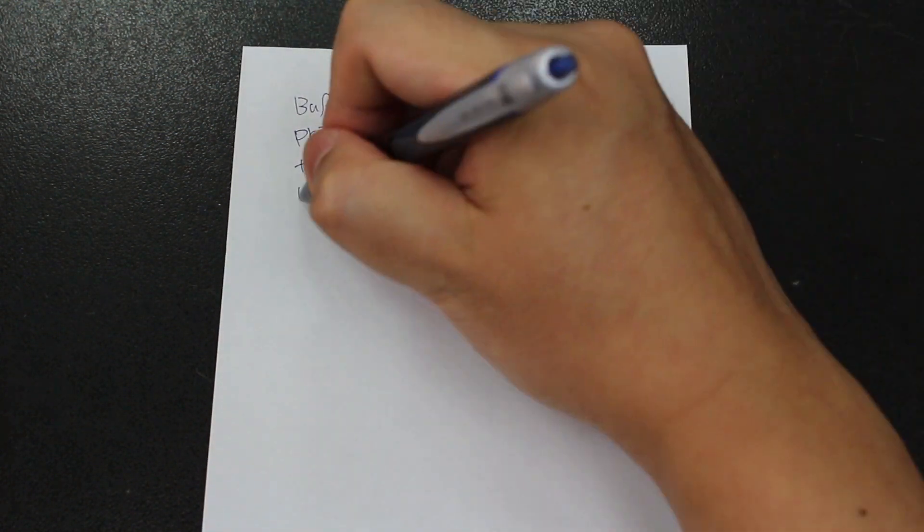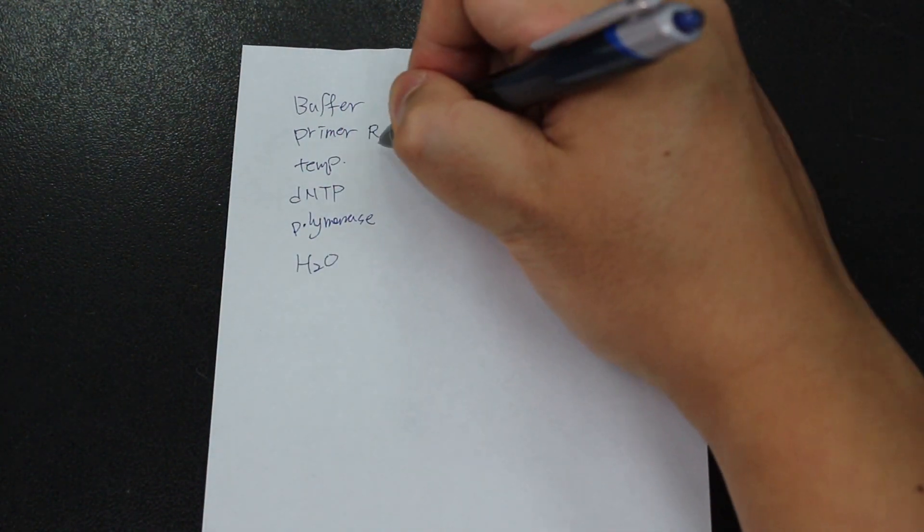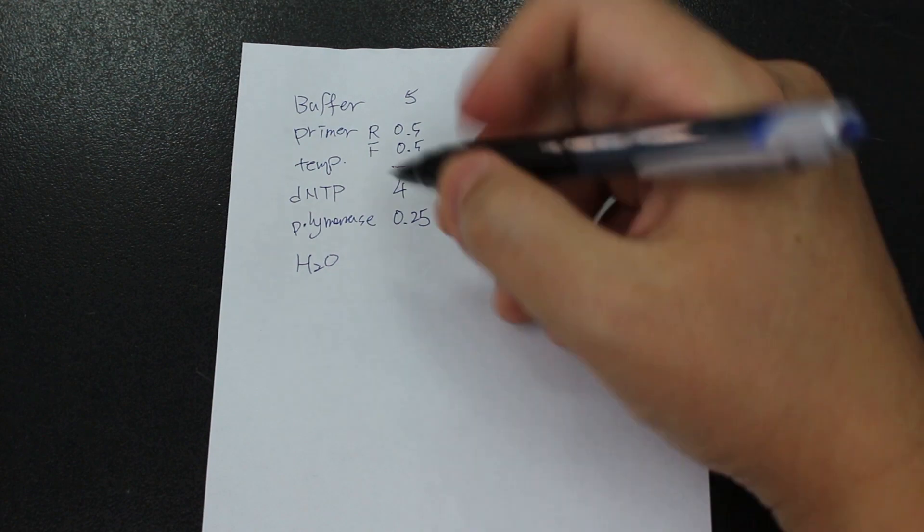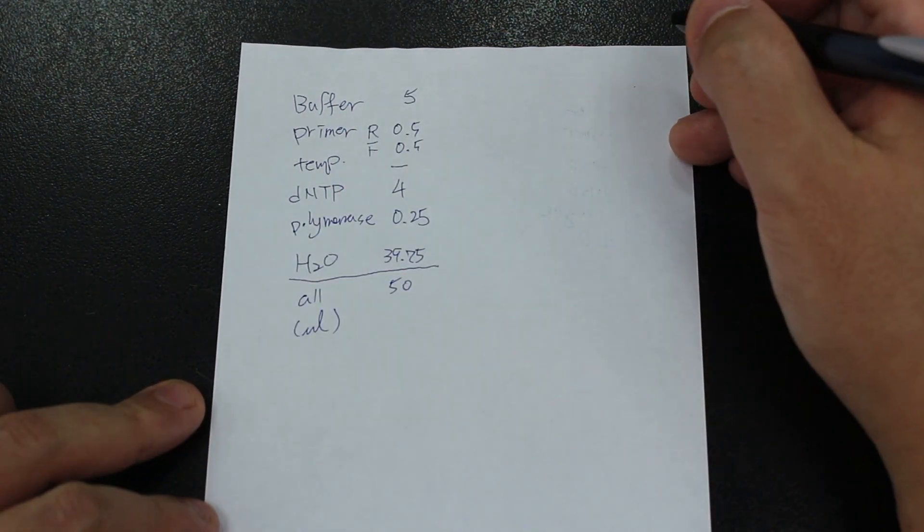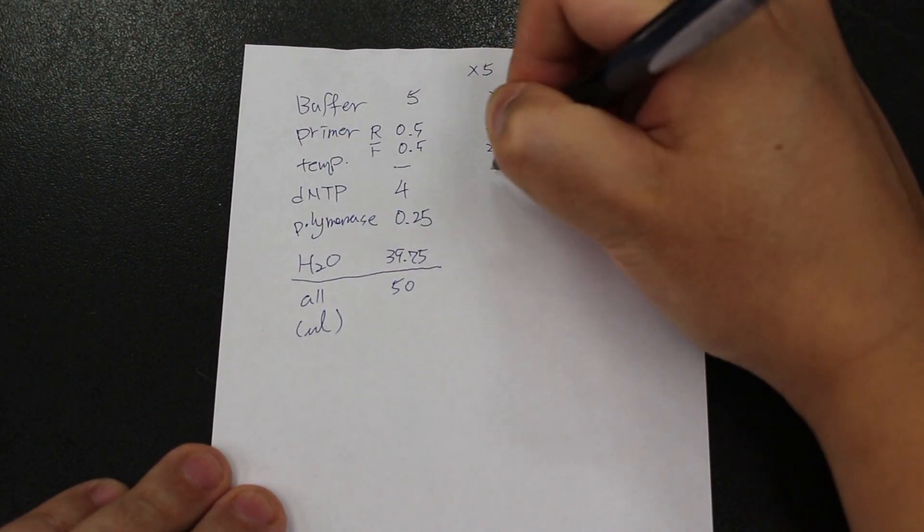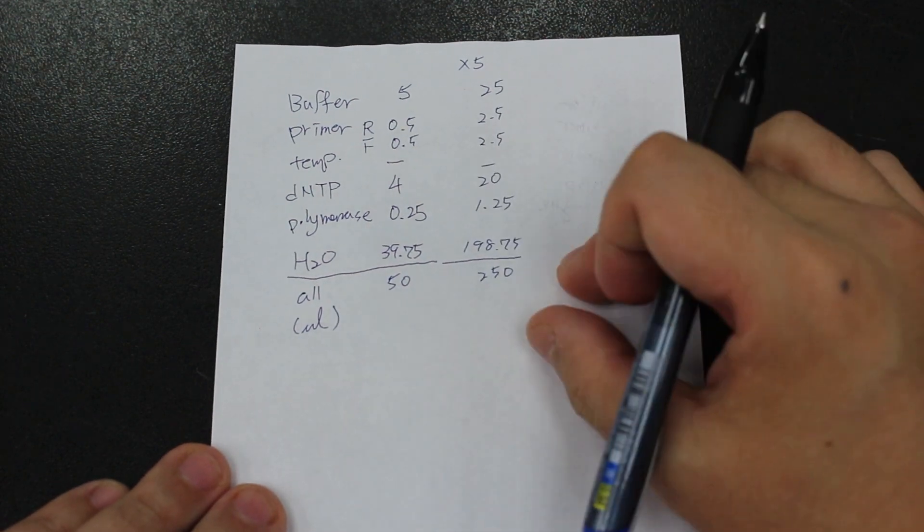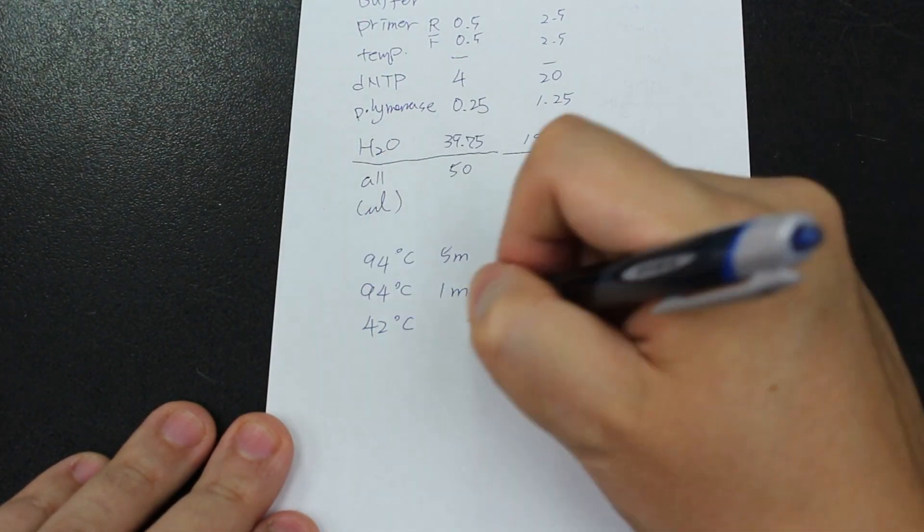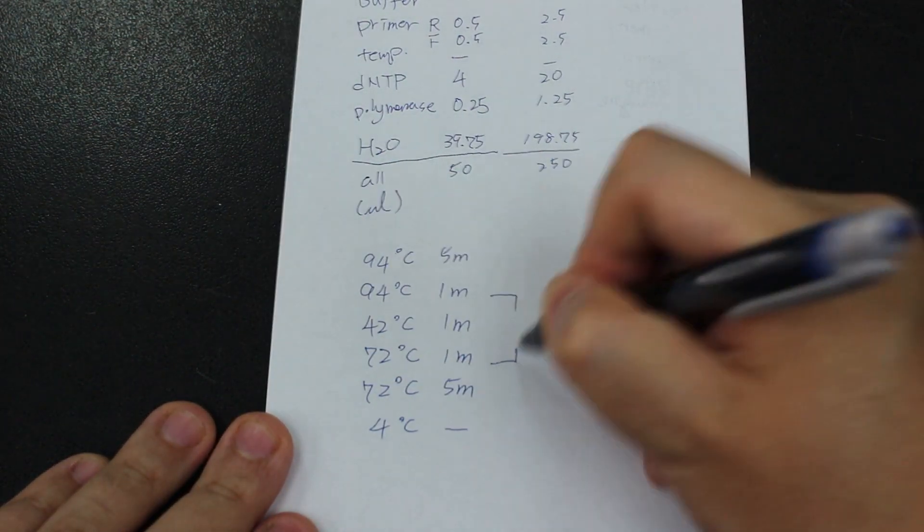Before start, I suggest writing down all the reagent you will use as well as the PCR protocol. And since I have four samples, I will prepare five times the amount of reagent to compensate for the pipetting error.